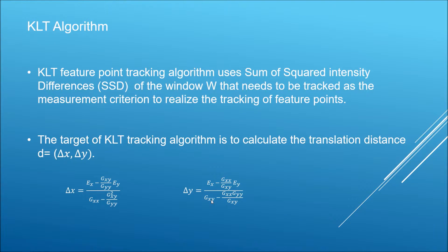The KLT algorithm uses the similarity measure. The KLT feature point tracking algorithm uses the Sum of Squared Differences (SSD) of intensity as its similarity measure. The SSD of the window to be tracked is the measurement criterion to realize tracking of feature points. The target of the KLT tracking algorithm is to calculate the translation distance between feature points in consecutive frames, defined as d = (Δx, Δy).